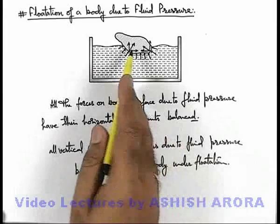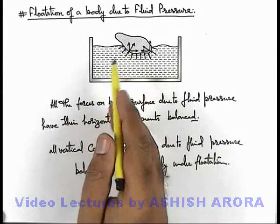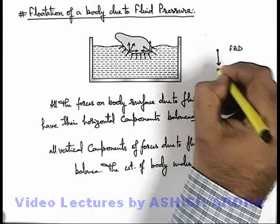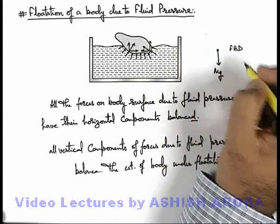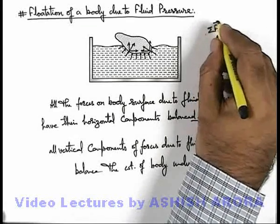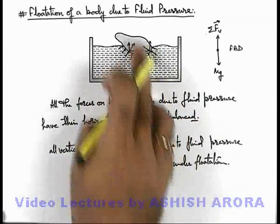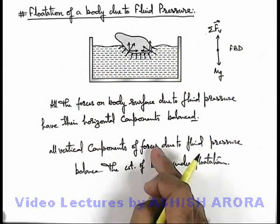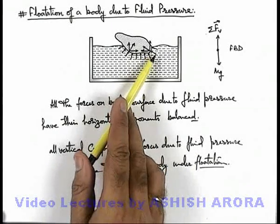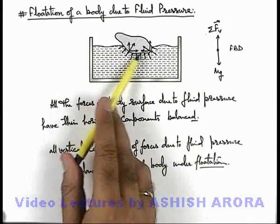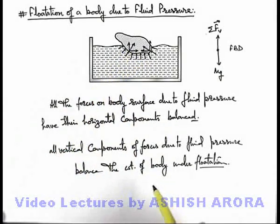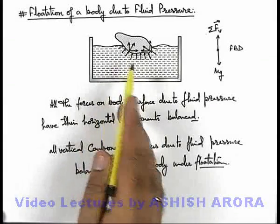So we can simply state: if a body is floating under equilibrium, if we draw the free body diagram of the body, in the downward direction it will be experiencing its weight mg, and in the upward direction it is the summation of all vertical forces due to fluid pressure which are balancing the weight of the body. Under flotation, the whole body surface which is in contact with the fluid under its submerged portion — all these forces will have their vertical components balancing the weight of the body, and the horizontal components cancel each other.